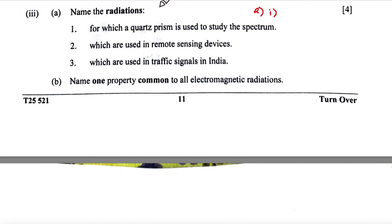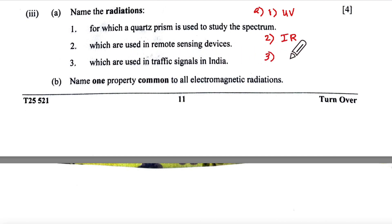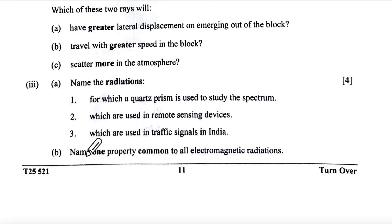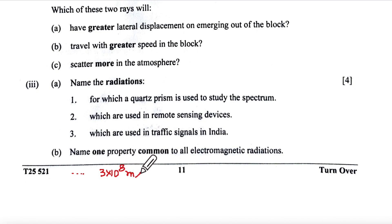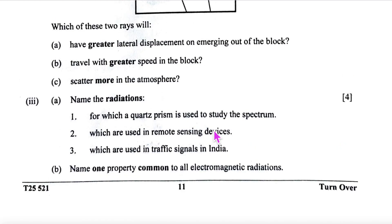Question 5, third subpart. A quartz prism is used to study the ultraviolet spectrum. Radiations used in remote sensing devices are infrared. Radiations used in traffic signals in India are visible light. For part B, one property common to all electromagnetic radiations is that they all travel with the same speed in vacuum — 3 × 10⁸ m/s. This finishes question 5. Questions 4 and 5 are covered in this video; questions 6 and 7 will be in the next video.